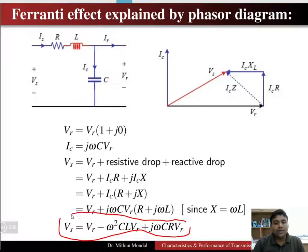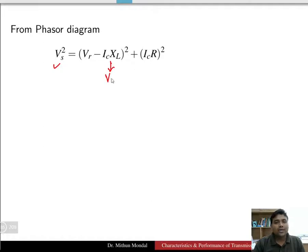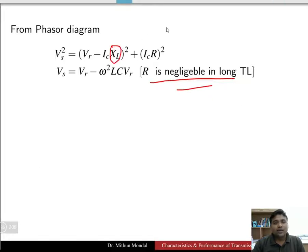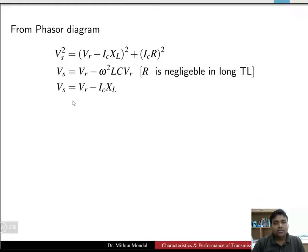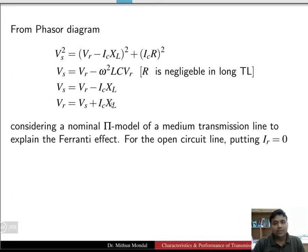From the phasor diagram, VS² equals (VR − IC·XL)² plus (IC·R)². Since R is negligible in a long transmission line, the equation simplifies to VS equal to VR minus IC·XL. Rearranging, VR is equal to VS plus IC·XL.